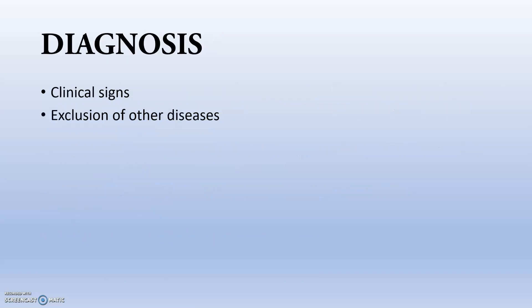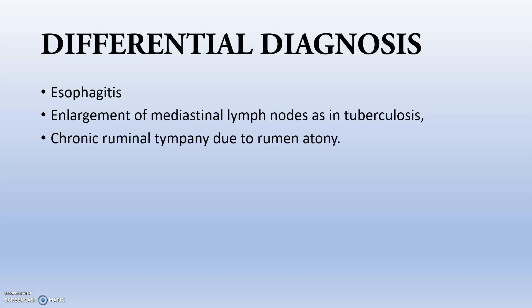Diagnosis is mainly based on clinical signs and exclusion of other diseases associated with the esophageal area. For differential diagnosis, we have to differentiate from esophagitis, chronic ruminal tympani due to ruminal atony, and tuberculosis — where mediastinal lymph node abscess or tumors may be present. Thank you.